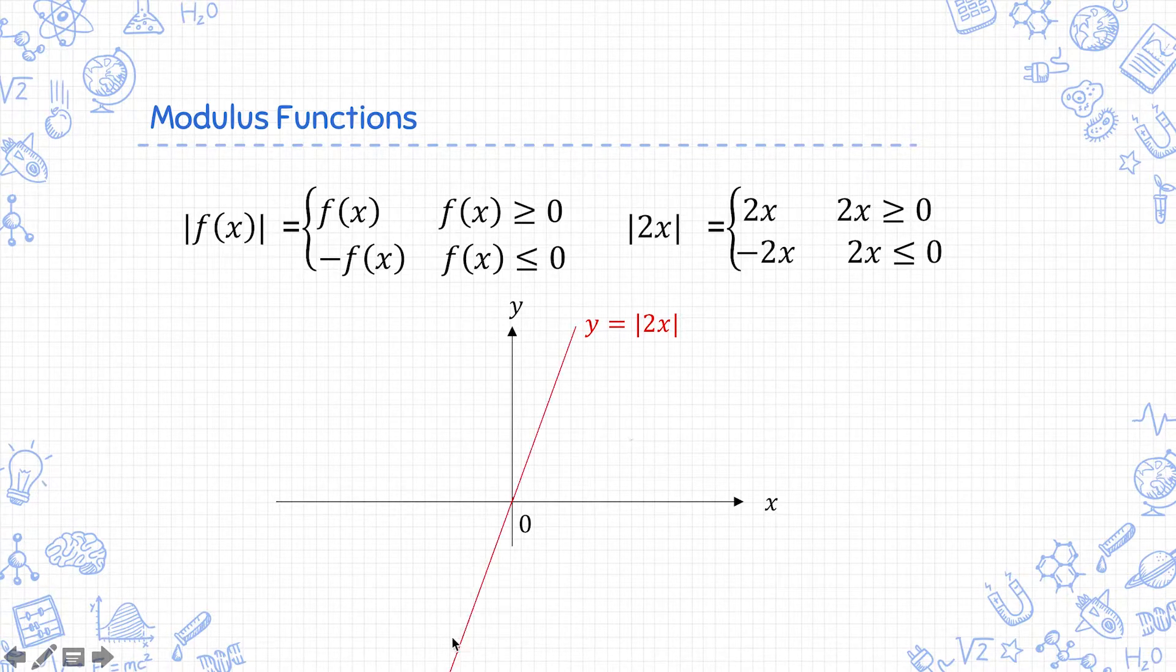So this is the graph of y equals 2x. You keep the part where it's positive and then flip over the part where it is negative. So this is the part of the graph where 2x is positive and it is actually the graph y equals 2x.